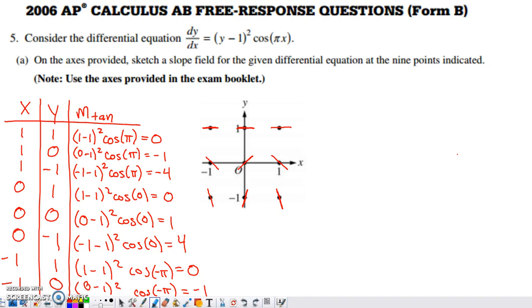In this video, we will check out an old AP exam problem from way back in 2006. It appeared in form B that year, and it was only on the AB exam. It's a differential equations question, and it had to do with a slope field, then a second part in the middle, and then a separable differential equation at the end, which is pretty typical of a lot of free response. We'll get through it bit by bit.